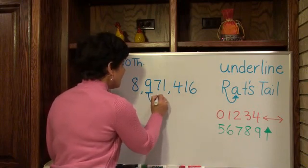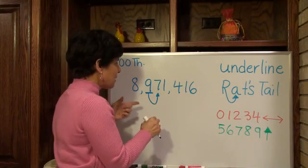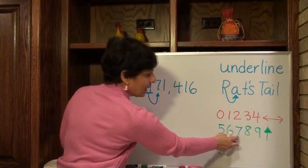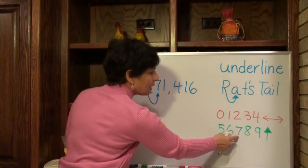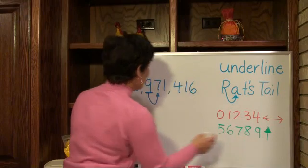Need my rat's tail. Rat's tail goes to the 7 here. Now let's see what does the 7 tell the 9 to do. When I look over here for a 7, it's right here in the green in the bigger numbers. That means the 9, the underlying number has to go up.